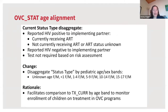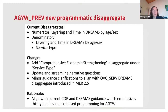OVC-HIV-STAT has disaggregates for status type, which includes three options: reported HIV positive, reported HIV negative, or tests not required. In MER 2.6, these groups will be further disaggregated into pediatric age/sex bands, facilitating comparison to TX-CUR for monitoring enrollment of children in OVC programs on treatment. For AGY PREV, the most significant update is the addition of comprehensive economic strengthening as an additional disaggregate under service type in the denominator, aligning with the COP and DREAMS guidance emphasizing evidence-based programming for AGYW.